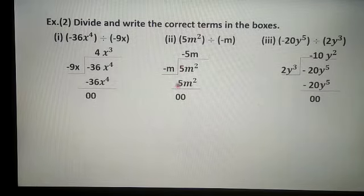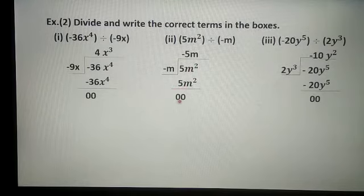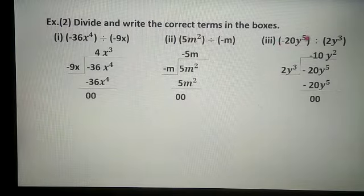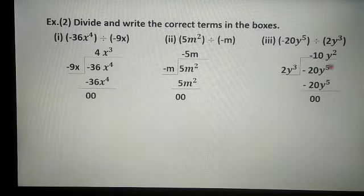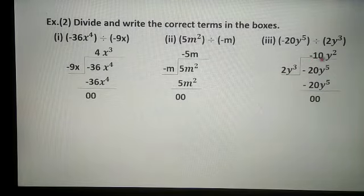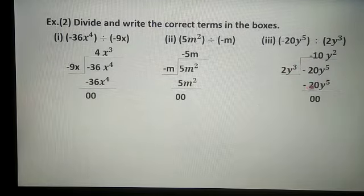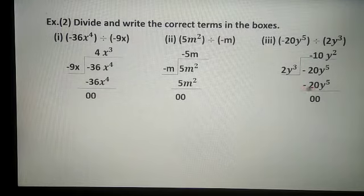As we do subtraction, minus 5m square is put here, and 5m square minus 5m square gives 0. So the quotient is minus 5m. In the third term, minus 25y raised to 5 is divided by 2y cube. The monomials are minus 20y raised to 5 and 2y raised to 3. So 2 multiplied by minus 10 gives minus 20, and y cube multiplied by y square gives y raised to 5. Subtracting, both cancel to give remainder 0, so minus 10y square is the quotient.